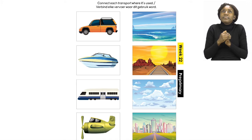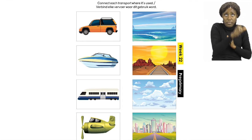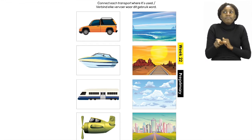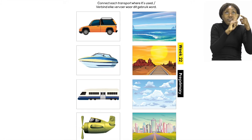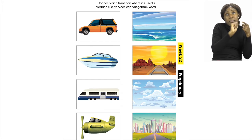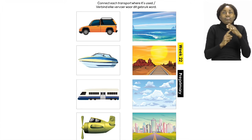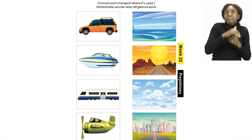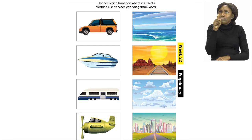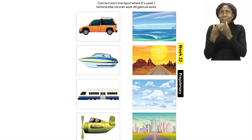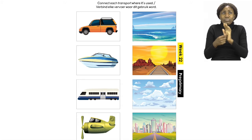Let's look at each transport on the page. First we see a picture of a car, then a picture of a boat, then a picture of a train, and lastly a picture of an aeroplane. Next to these pictures you have more pictures that show us where these transport items are used.